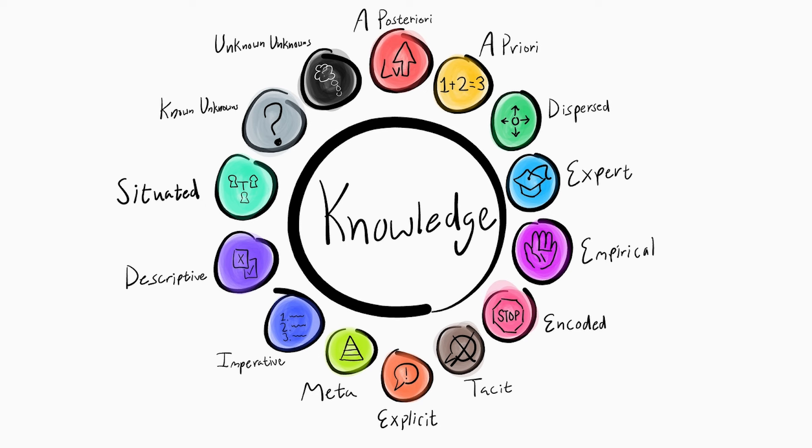Imperative knowledge. Imperative knowledge is knowing how to do something. So knowing how to do specific steps for a process. This could be any procedure, like cleaning or riding a bike.